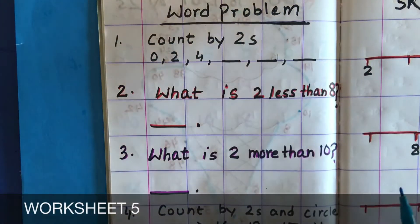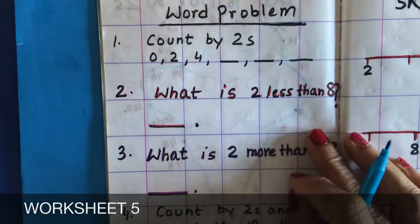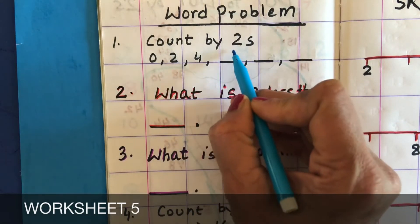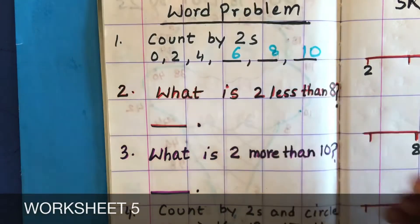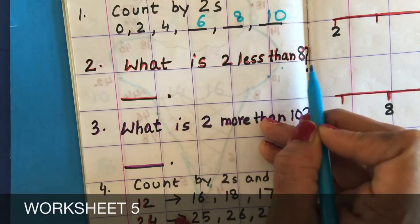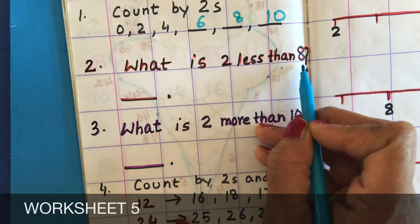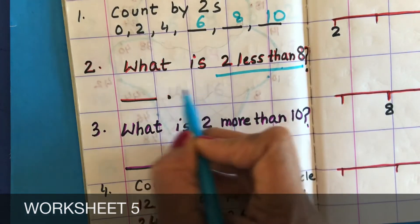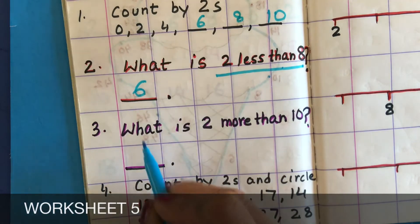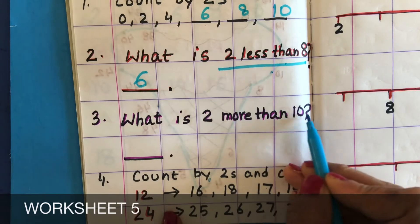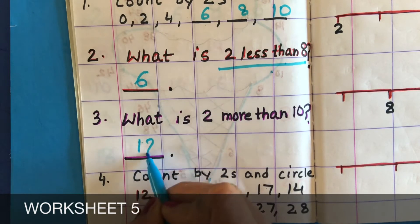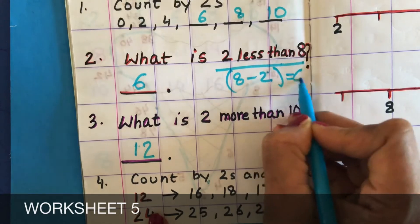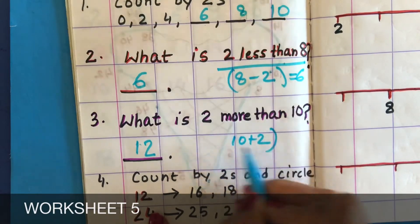They can also color it. When a child starts knowing skip counting, you can introduce the word problem — but before that they have to be comfortable with the other worksheets. Count by twos: 0, 2, 4, 6, 8, 10. What is 2 less than 8? That will be 6. What is 2 more than 10? It will be 12. They can write it as 8 minus 2, or 10 plus 2 equals 12.